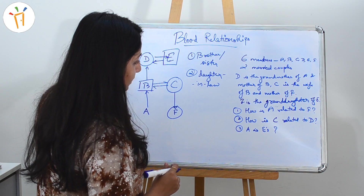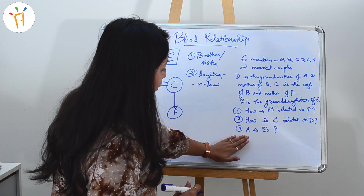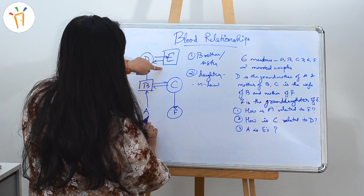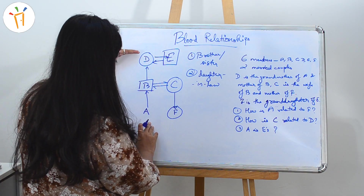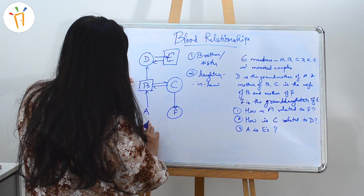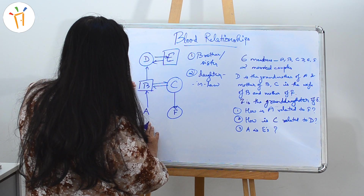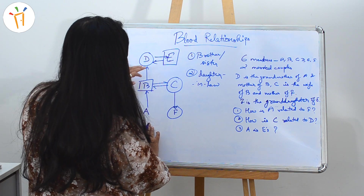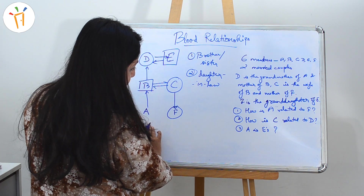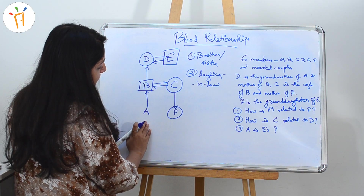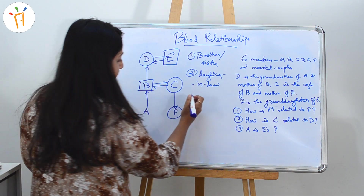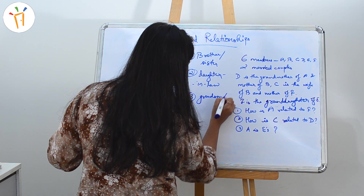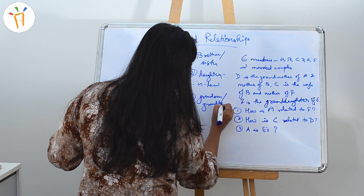Third question: what is the relationship between A and E? A is in the first generation and E is in the second generation. A's father is B, B's mother is D, and D's husband is E. So E will be the grandfather of A, meaning A will be either the grandson or granddaughter of E. The answer is grandson or granddaughter.